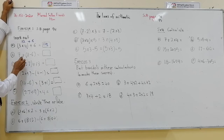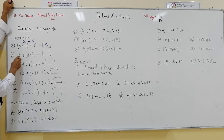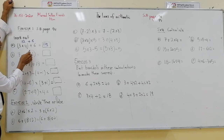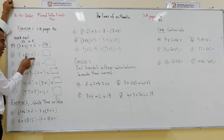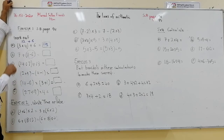Here we have 7 plus (11 minus 6). Should I make 7 plus 11 then minus 6, or should I subtract 6 from 11 inside the brackets then add 7? The second one is correct.